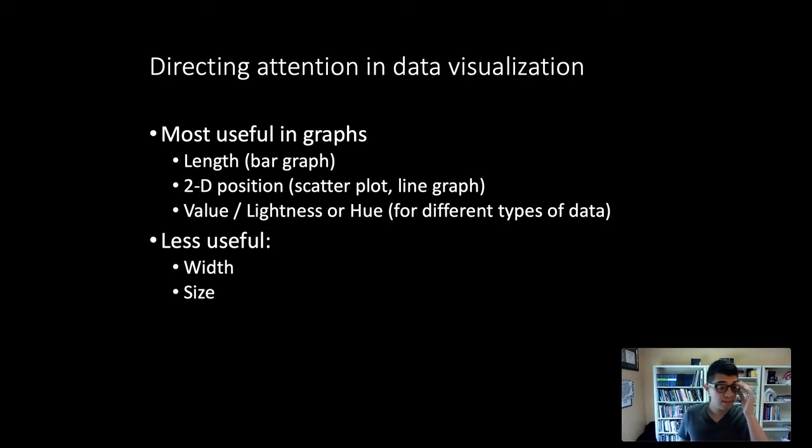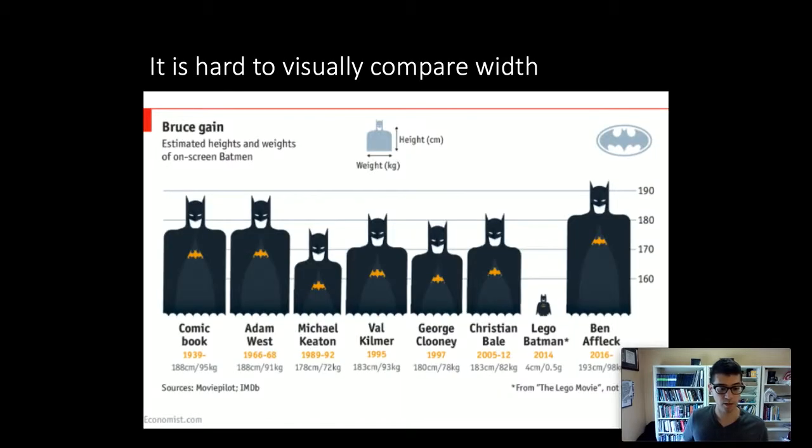Width and size, like we talked about with the area and the pie chart, is less helpful. That also comes into play with column versus bar chart situations. Let's think of an example where we're using width and size to convey information that isn't especially helpful for the viewer and that our mind isn't able to process very well.